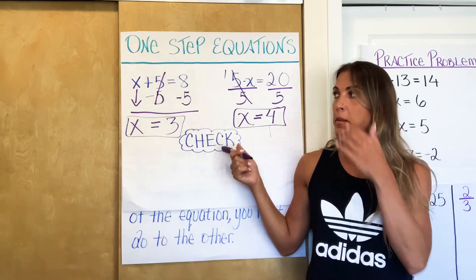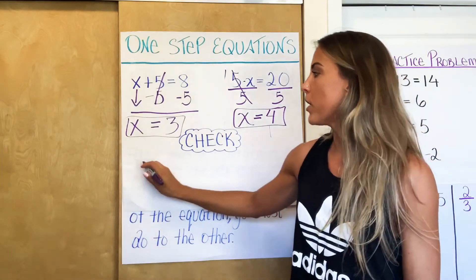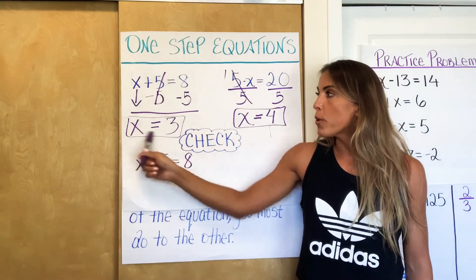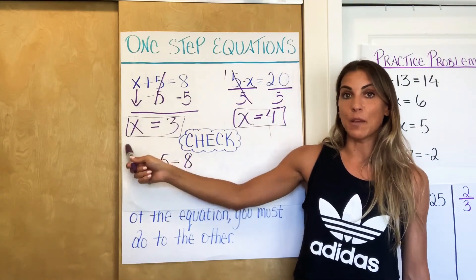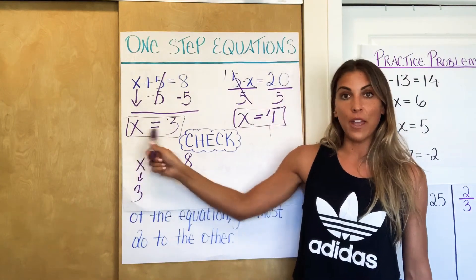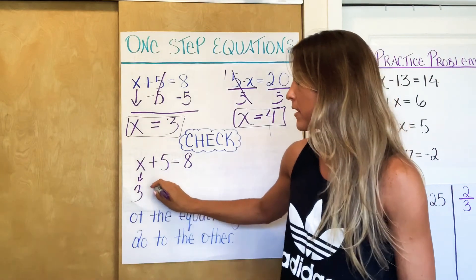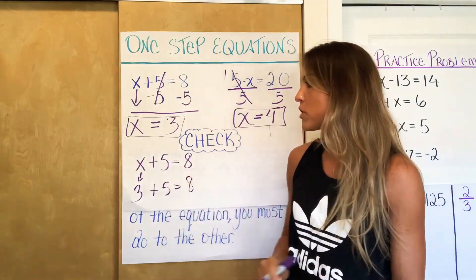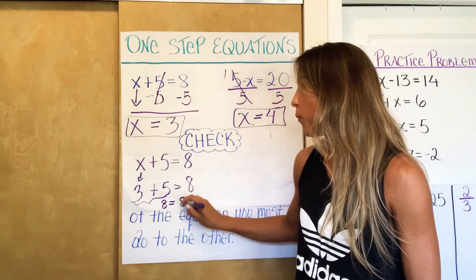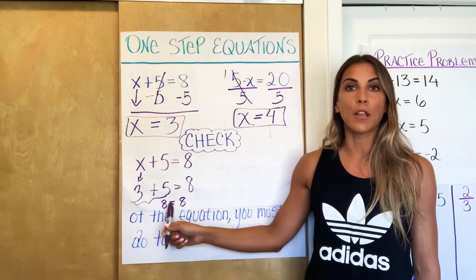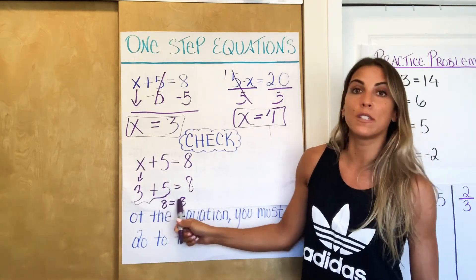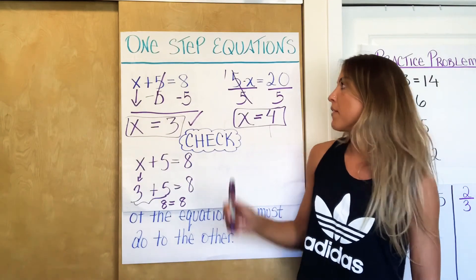Checking is going to get very important as equations get more complex. When you check your solution, start by writing the original equation: X plus five equals eight. If we believe X equals three, then X and three are interchangeable — wherever we see X, we write three instead. So we get three plus five equals eight. We simplify the left side: three plus five is eight, giving us eight equals eight. That's a true statement, which tells us our solution of X equals three is correct.